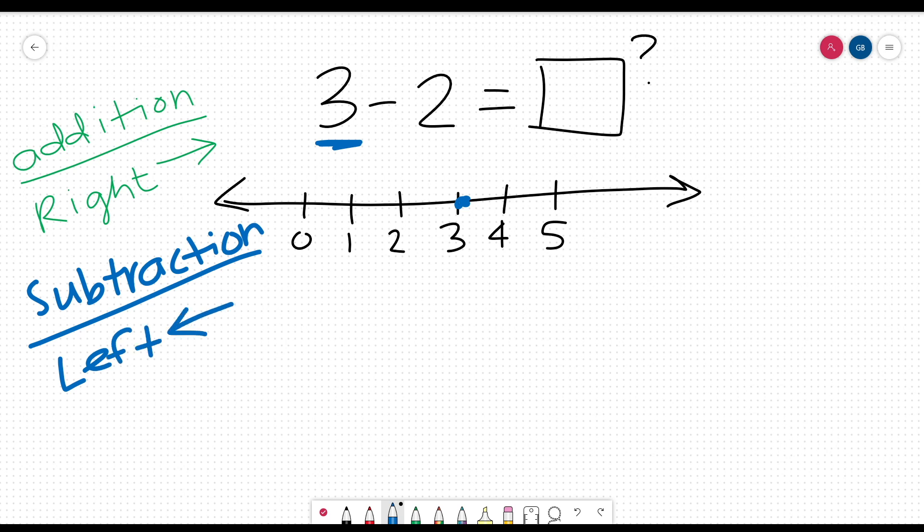So you will find the second number in the problem. Here it is a 2. So you are going to move two dashes to the left on the number line. 1, 2, and we landed at a 1. So the answer to this problem is 1.